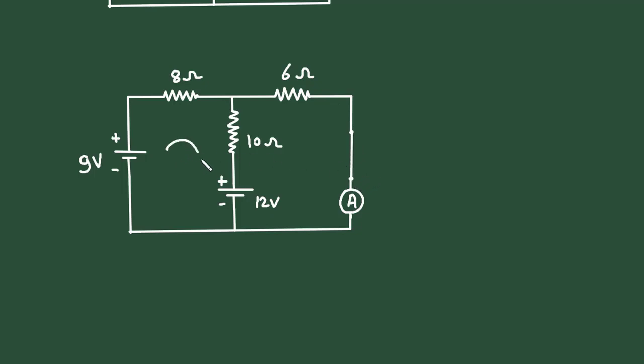Now, let's assume this is mesh number 1 with current I1, and this is mesh number 2 with current I2. Both currents are in the clockwise direction.